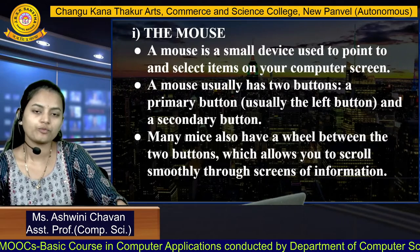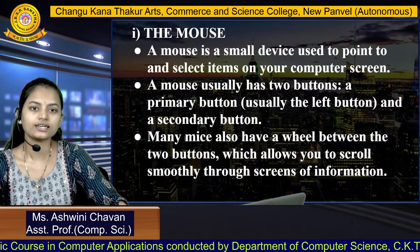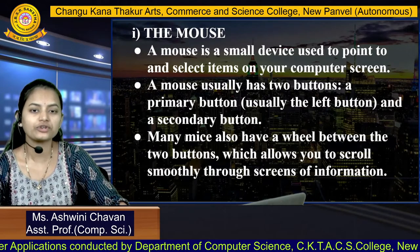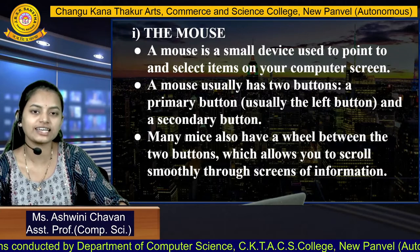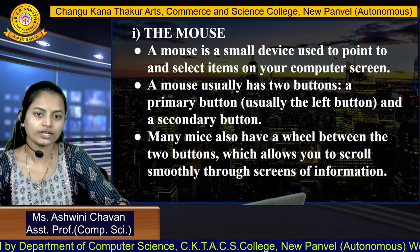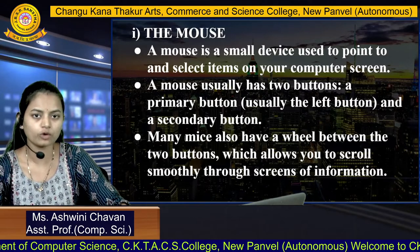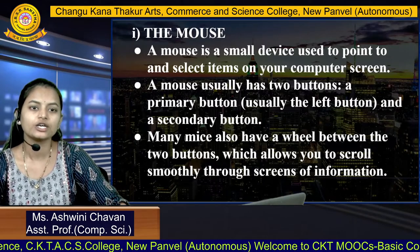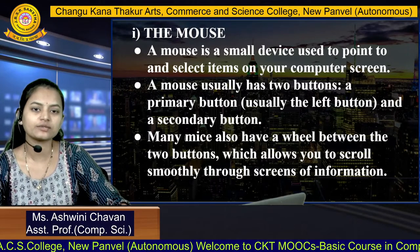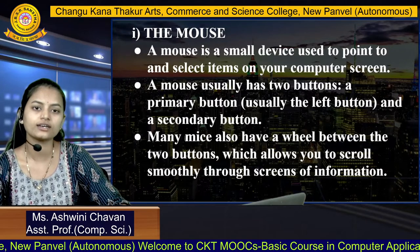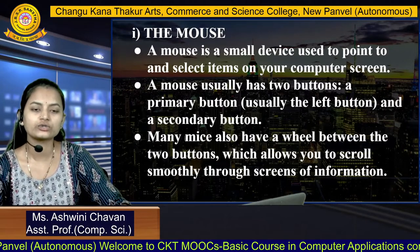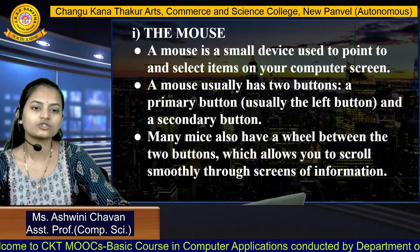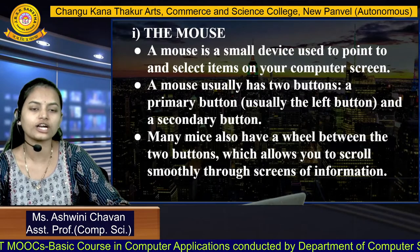An example of the pointing device is the mouse. A mouse is a small device used to point and select items on your computer screen. With the help of that pointer, we can select any item on the monitor and click on it to browse that particular item. A mouse usually has two buttons: a primary button, usually the left button, and a secondary button on the right. Many mice also have a wheel between the two buttons, which allows you to scroll smoothly through screens of information.